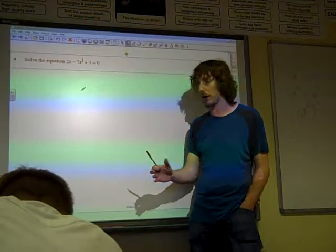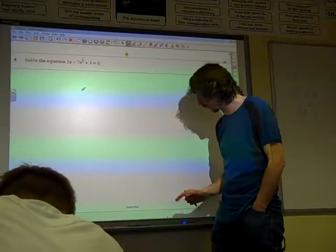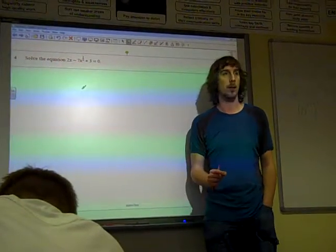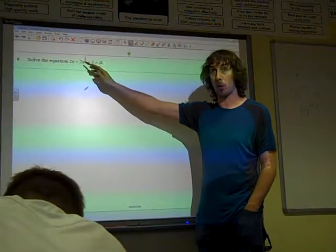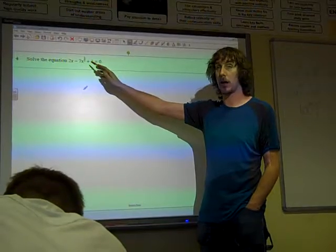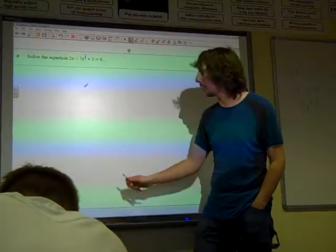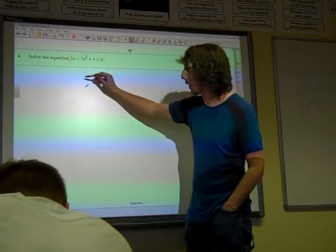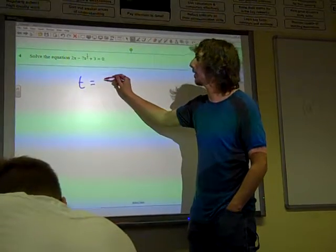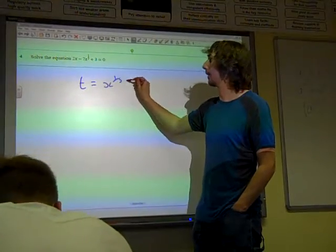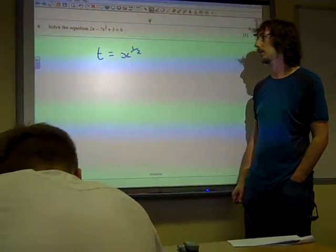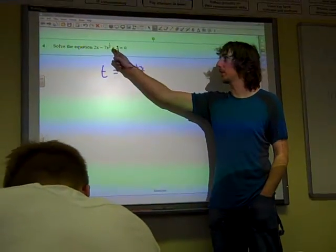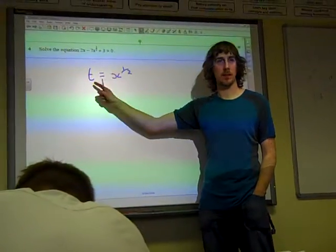All you do straight away, you want to turn this into the kind of quadratic you're more comfortable with. So you spot where that pattern is, look for the smaller one, and make a substitution. Now it doesn't matter what letter you use, some people might use a big x. I like using the letter t, but you can use any letter you like.